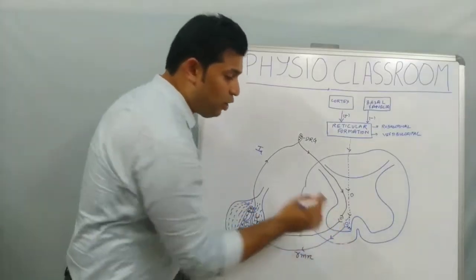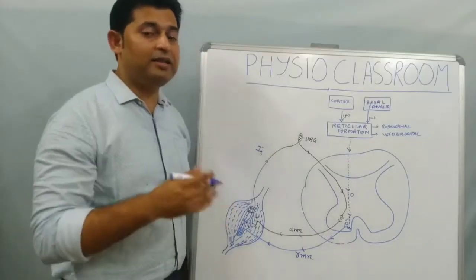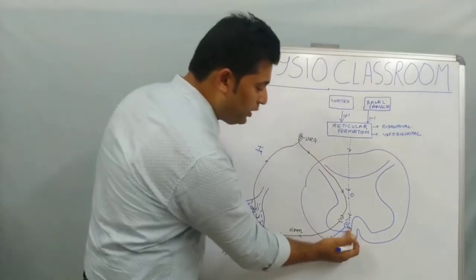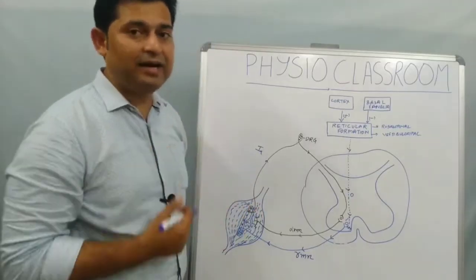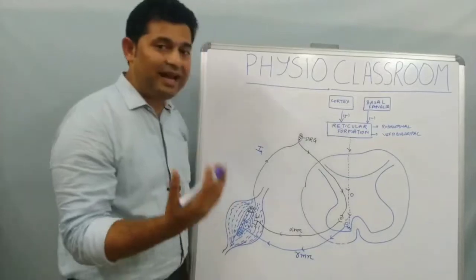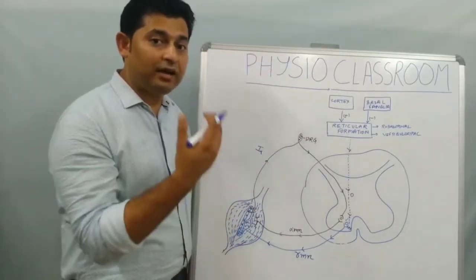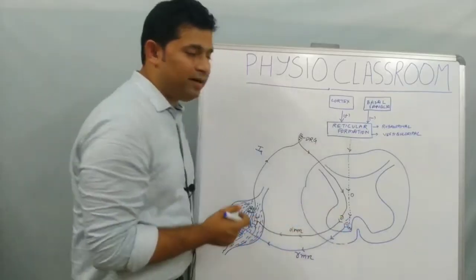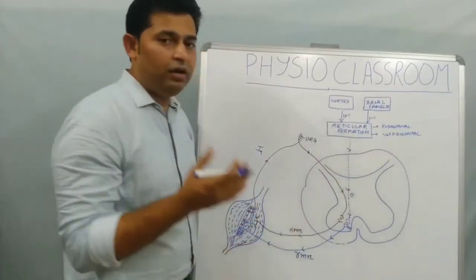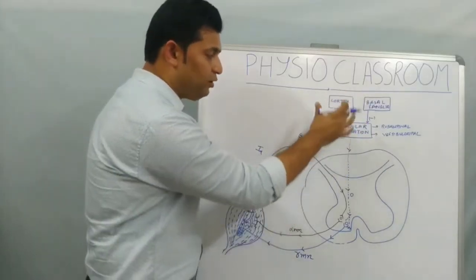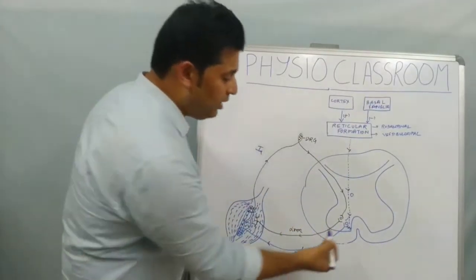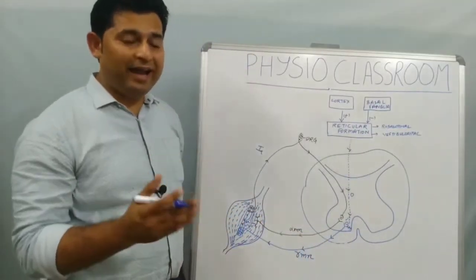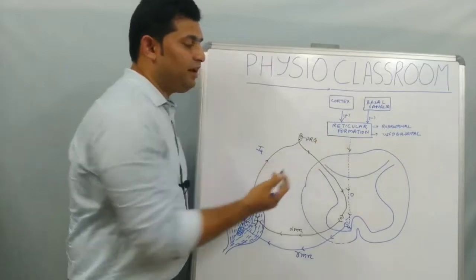These gamma motor neuron discharges need to be regulated by higher centers so that there is only optimal facilitation of the spindle and no unregulated firing, which would result in increased tone. The gamma motor neurons are excited by efferent impulses from the reticular formation in the brainstem. The two important pathways are the rubrospinal and vestibulospinal pathways, through which the reticular formation excites gamma motor neurons. The rate of this excitation depends on inputs the reticular formation receives from the cortex and basal ganglia.